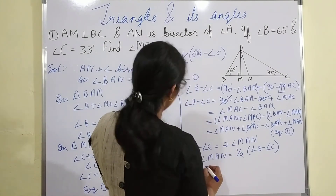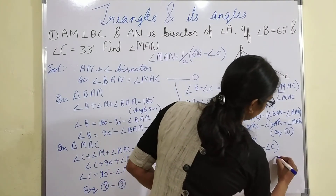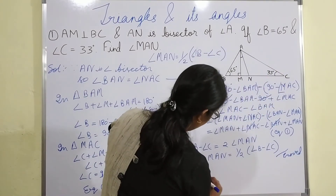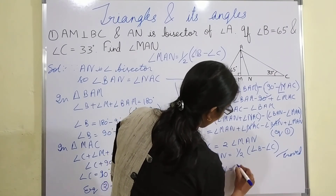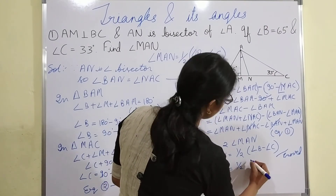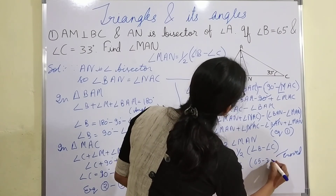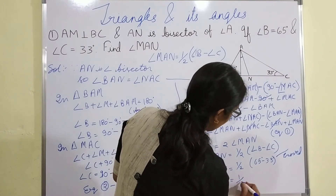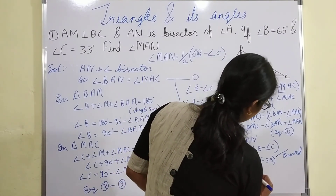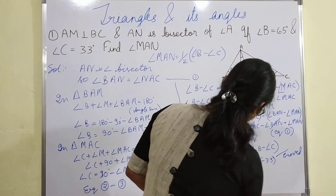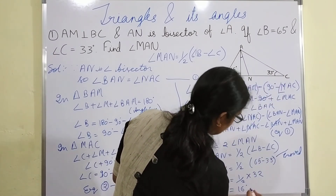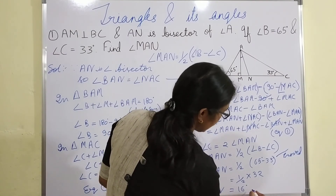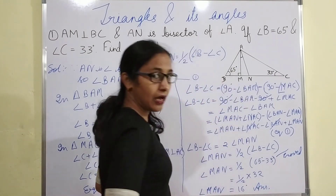Angle MAN equals half of 65 minus 33, which is half of 32, so angle MAN equals 16 degrees. This is our answer.